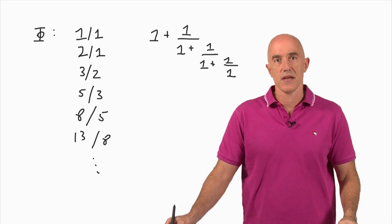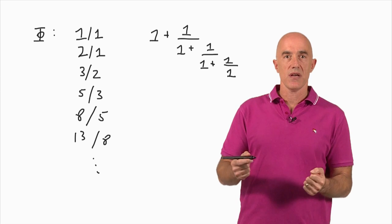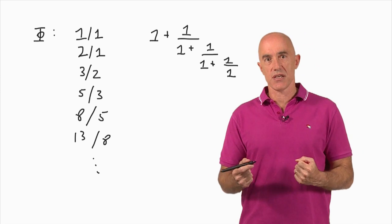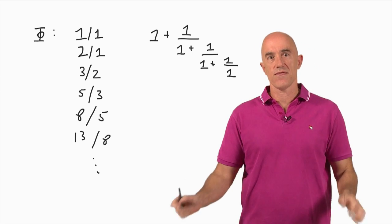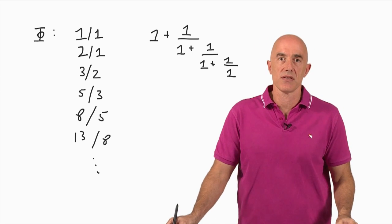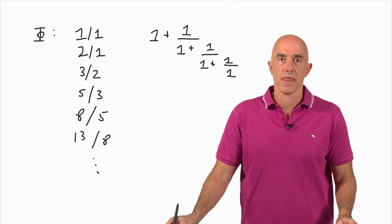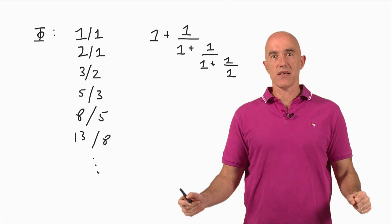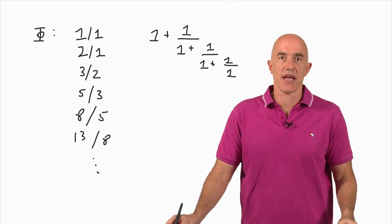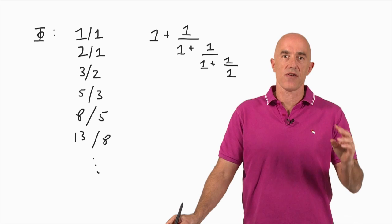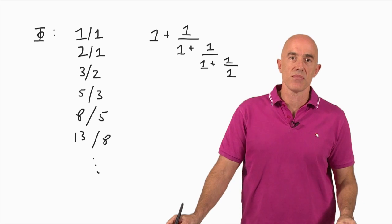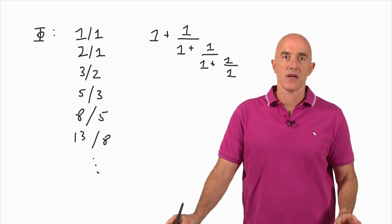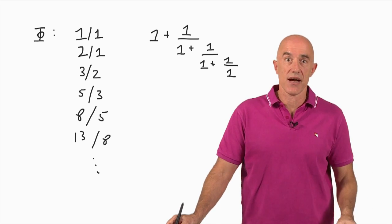We're now ready to go and understand why there are Fibonacci numbers in the sunflower. I'll see you next time.